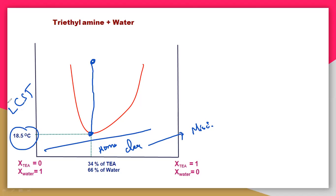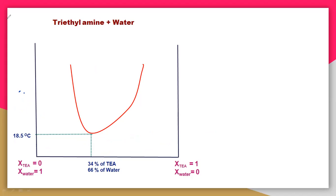The difference between upper CST and lower CST: for upper CST, you heat the mixture and at that particular temperature the partial miscible liquid converts into a miscible solution. For lower CST, you cool the mixture — at 18.5°C with 34% triethylamine, you get a perfectly clear miscible solution. That is the lower CST.